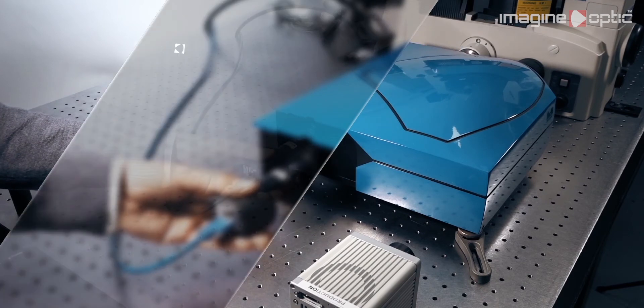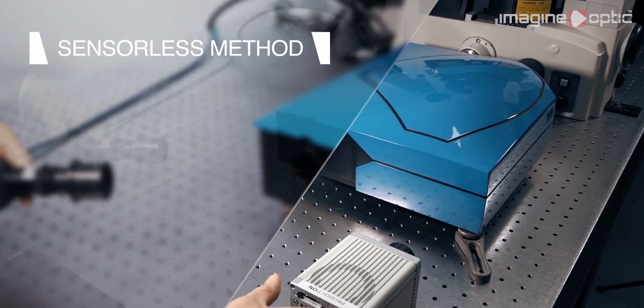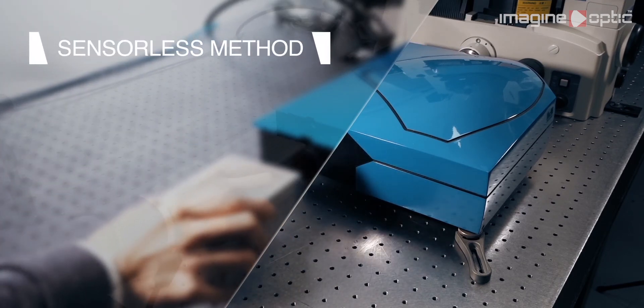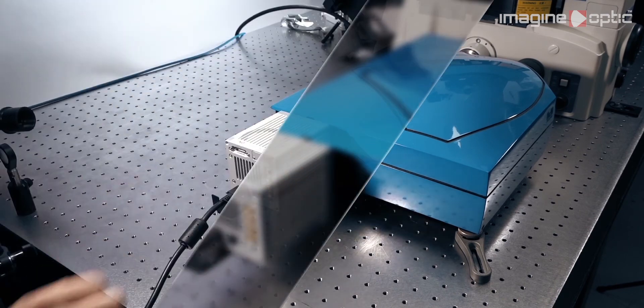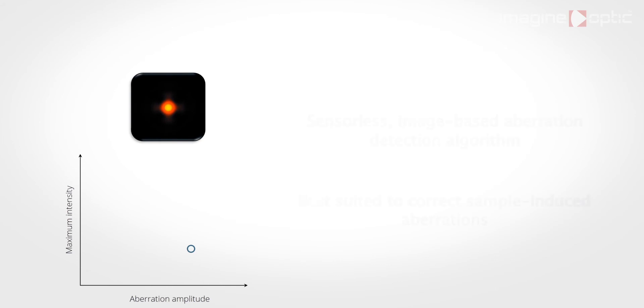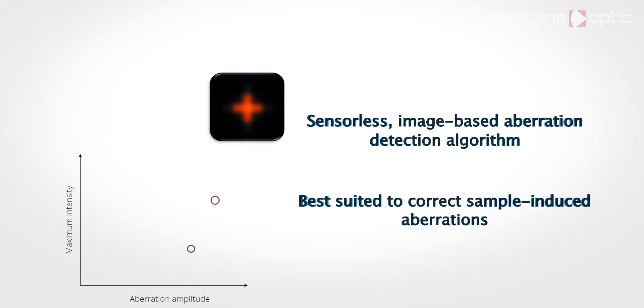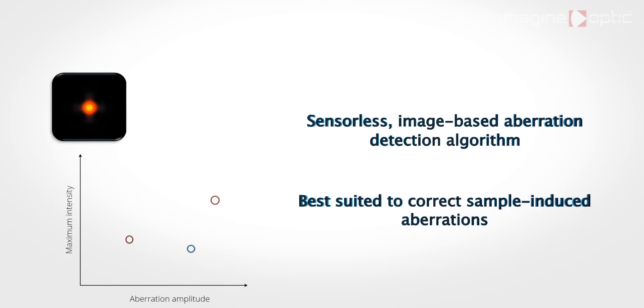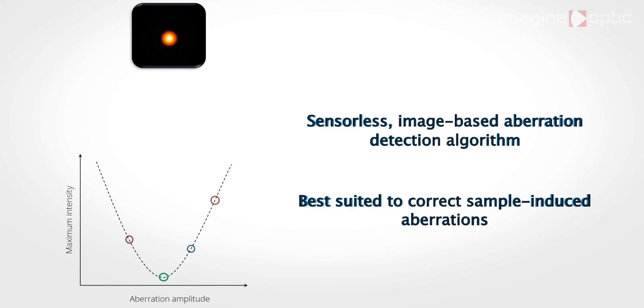To do so, we now replace the wavefront sensor by the camera and use an iterative image-based algorithm using images of a diffraction-limited bead. By applying a small quantity of specific aberrations, we can measure the quality of the PSF and determine which set of aberrations gives the best PSF.